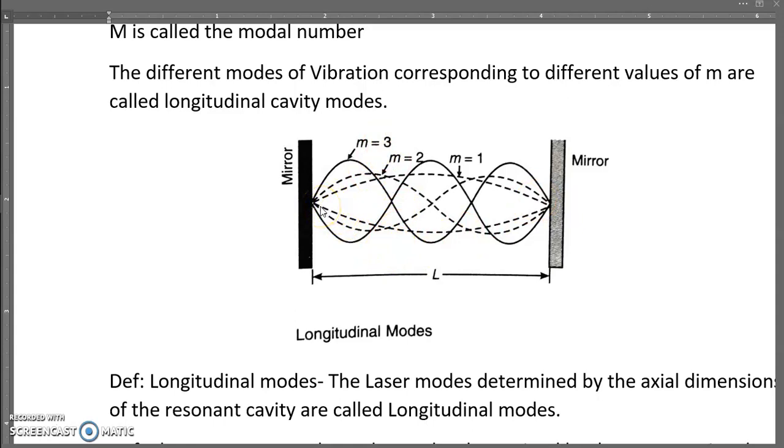Whereas the transverse modes are determined by the cross-sectional dimension of the resonant cavity. You can see here the longitudinal mode: the third mode of vibration with three waves, the second mode of vibration with two waves, and the last one here - the single mode of vibration.